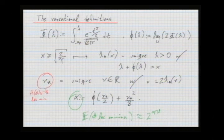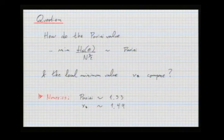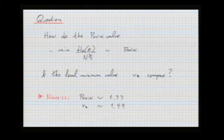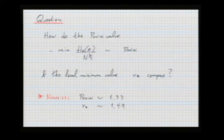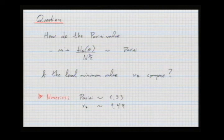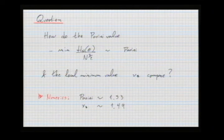One natural numerical question is how the local minimum energy nu-star compares to the global minimum given by the Parisi formula. From our preliminary numerics — with the caveat that we need to verify them — the local minimum value appears surprisingly close to the Parisi value, good to about one decimal digit. It seems interesting that requiring something much weaker than a global minimum still yields a similar energy value.